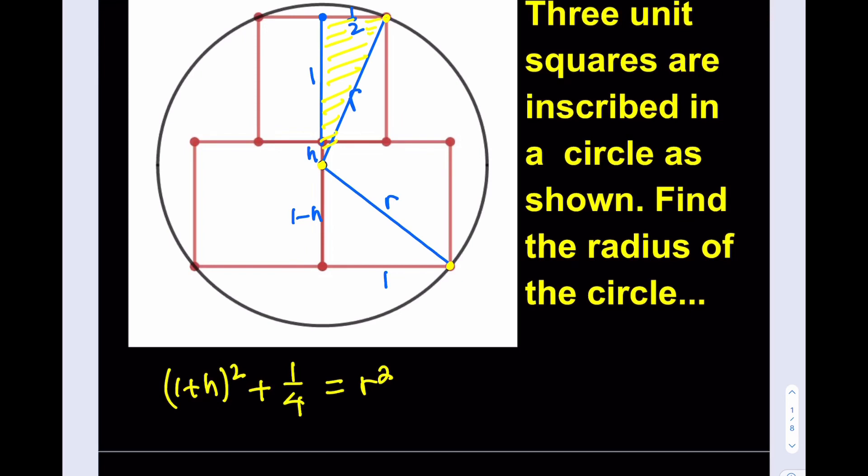Okay. For example, if you pick this length here, it wouldn't make sense because that would not be the radius. Okay? Awesome. Since those points are not on the circle.